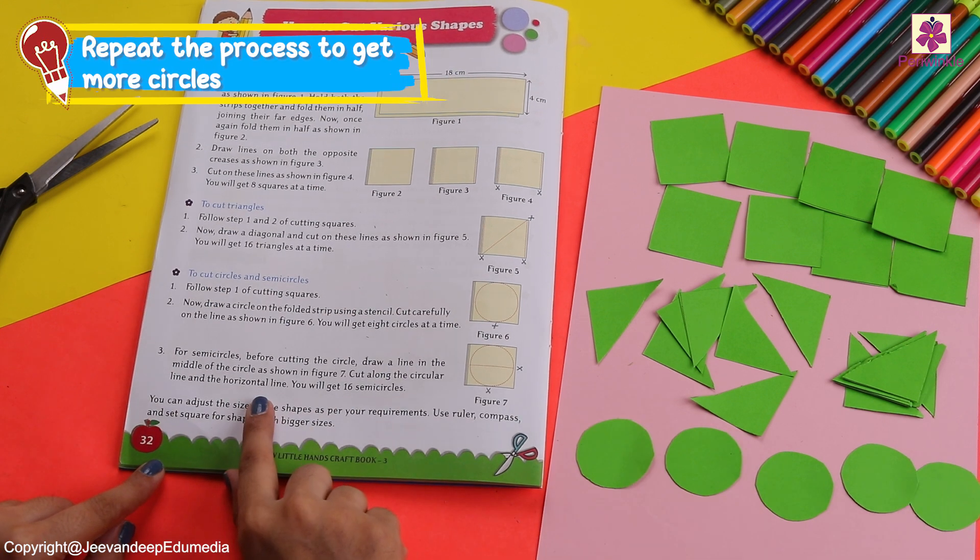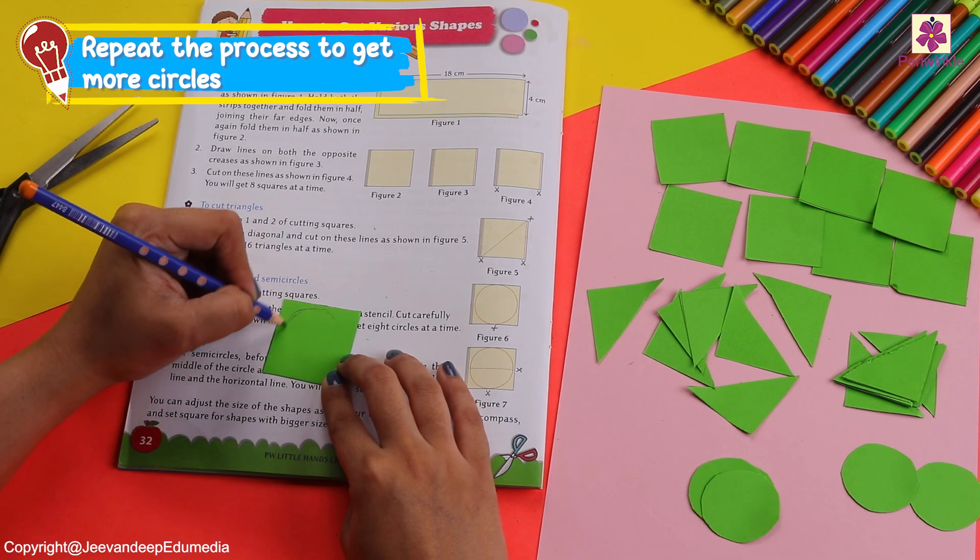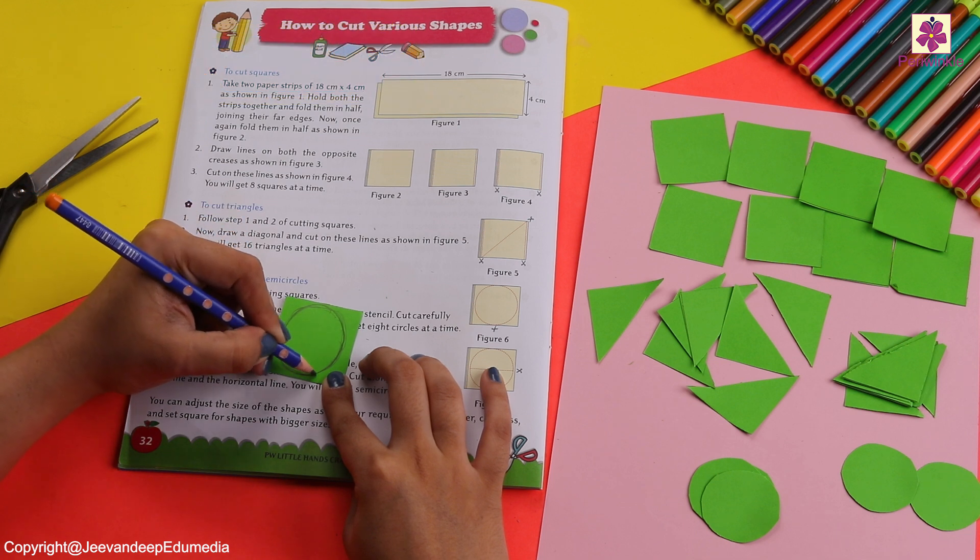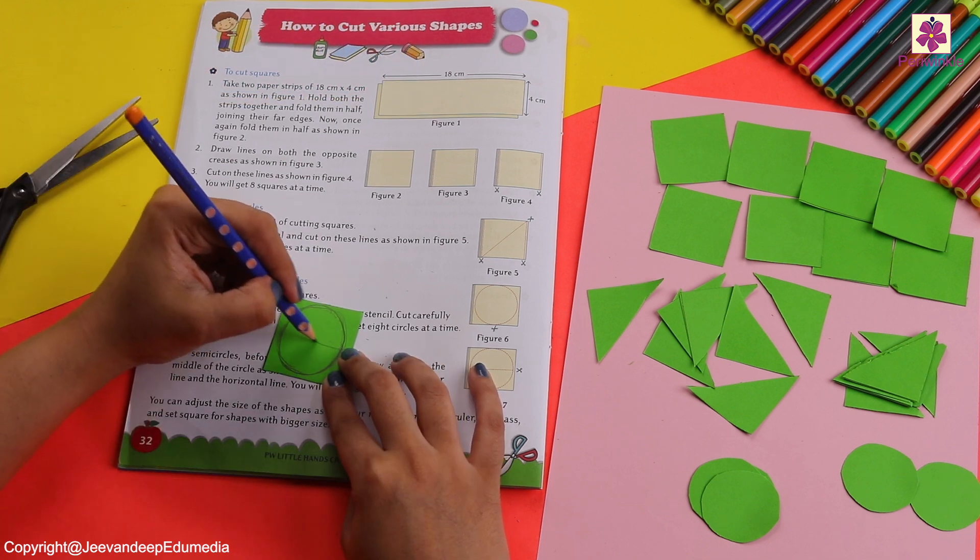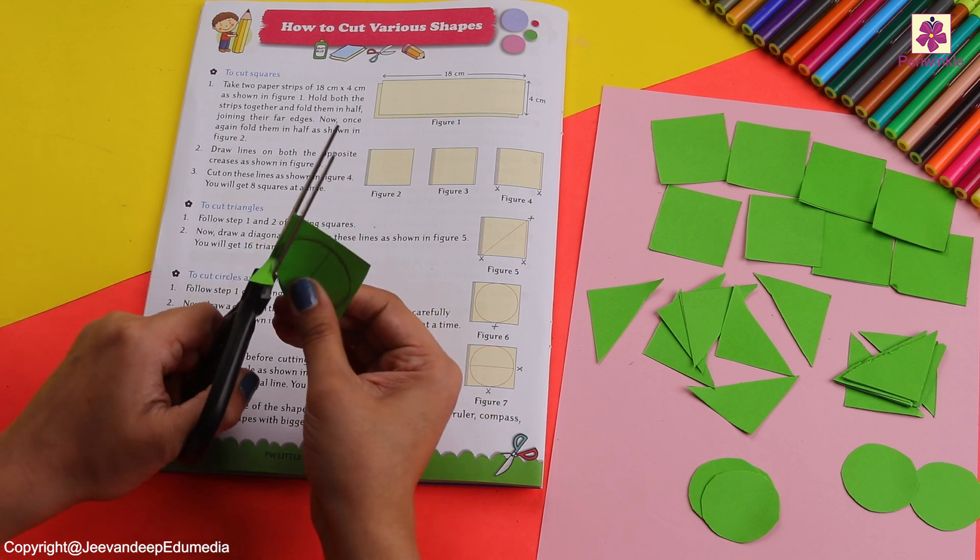Now let's try by cutting this circle into a semi-circle by making a sleeping line in the center. Let's cut the circle first.